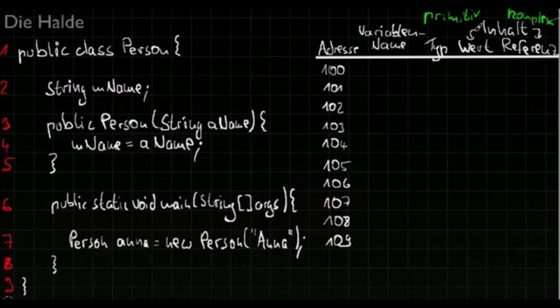A variable will never have a value and a reference at the same time. So we will use only one of both columns. Now let's start with the program execution.